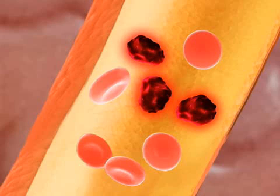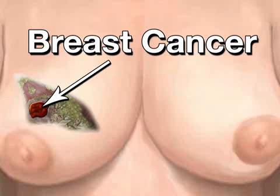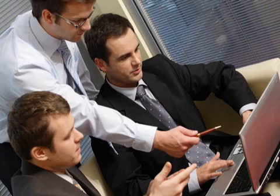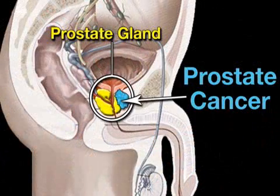Regardless of the type of cancer, if malignant cells are carried to vital organs in the body and settle there, the result can be death. Although cancer can spread, its classification is based on the area where the malignant cells originated. For example, breast cancer, one of the most common forms in women, begins with mutations in the breast. Similarly, the most common form in men, prostate cancer, originates in that gland.